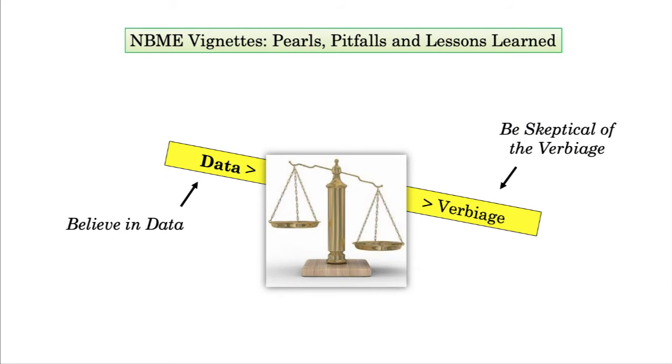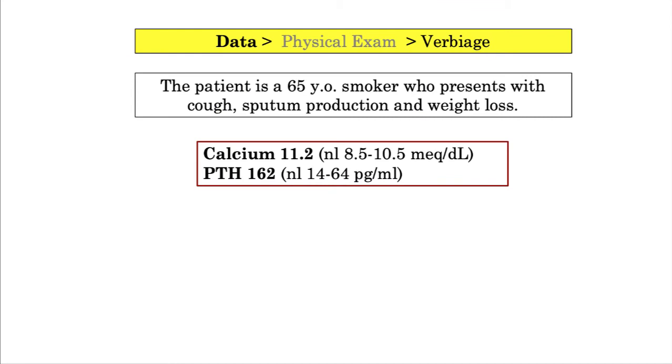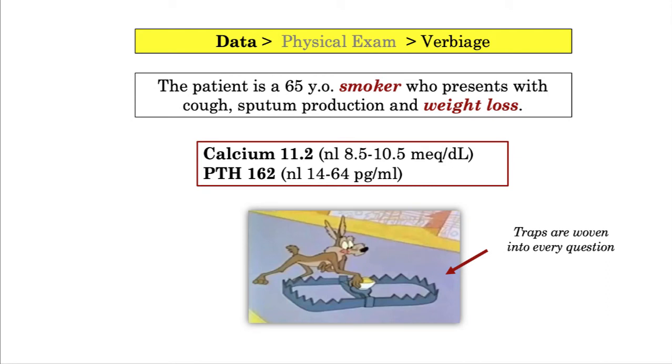Alright, I've made a big deal about placing greater weight on the data than the verbiage, but what does this mean? Returning to our patient with hyperparathyroidism, let's plug in some verbiage. In this example, the question writer generated the correct diagnosis through data, but is now employing intentionally deceitful language to get you off the scent. They describe a smoker with weight loss and hypercalcemia. The writer is setting a trap. They need to do this to entice you into selecting incorrect answer choices. Every question you encounter will have some temptation or trap, and it is easiest and most efficient to build them into the verbiage.